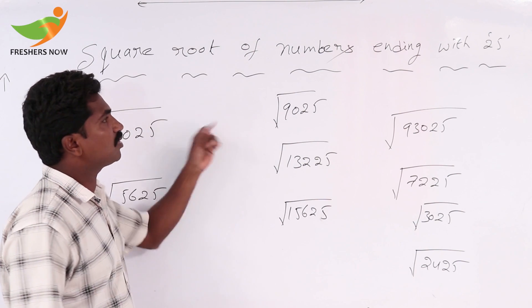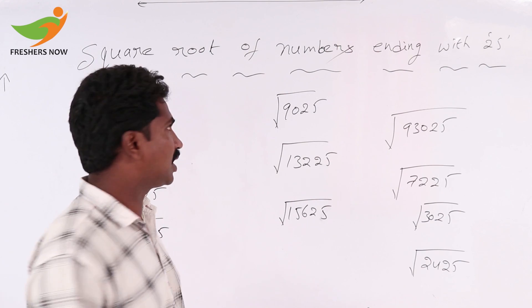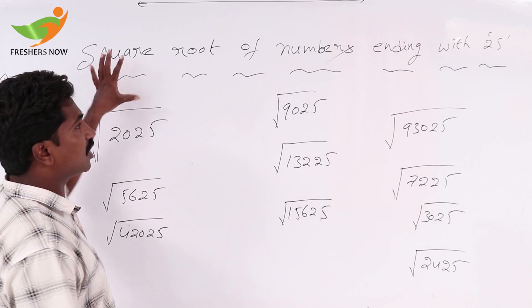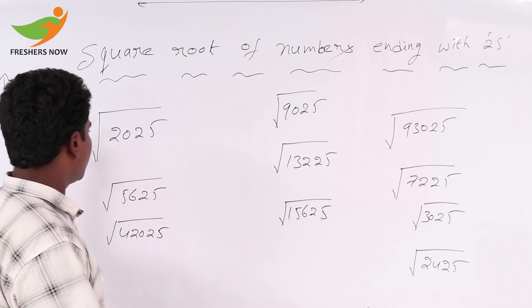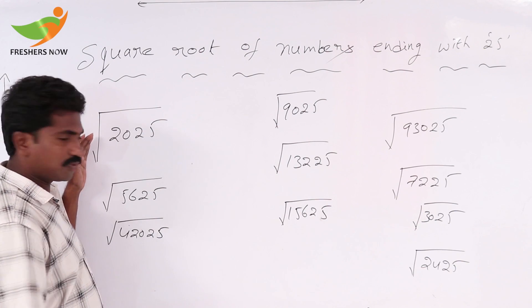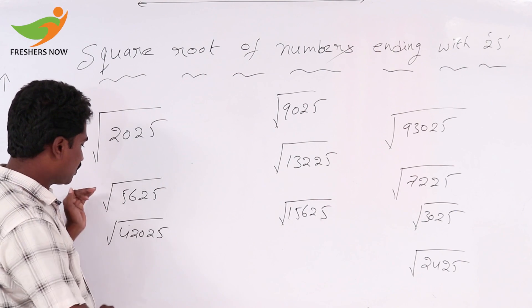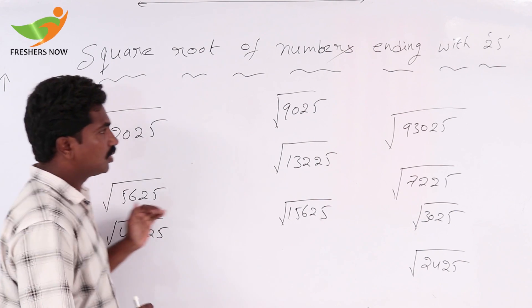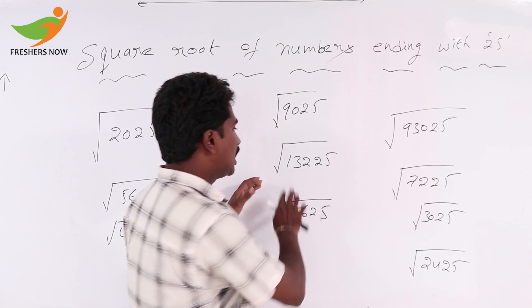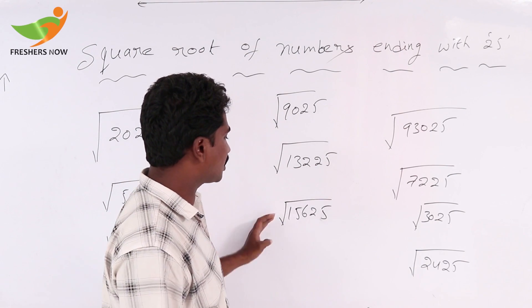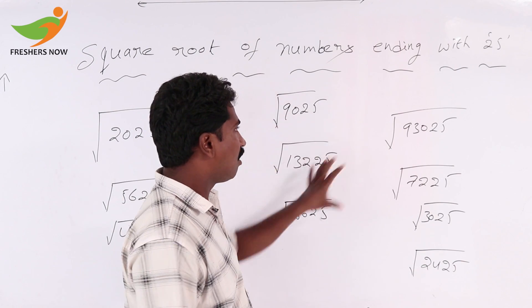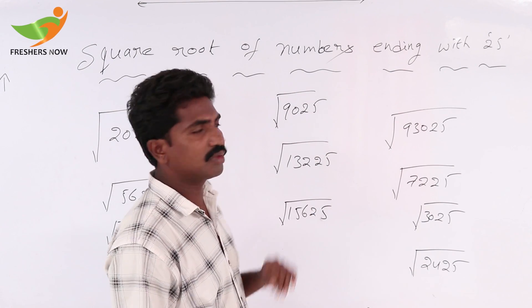Now we discuss square root of numbers ending with 25. Here 2025, square root of 5625, square root of 4025, square root of 9025, square root of 13225, square root of 15625. All of these are ending with 25.